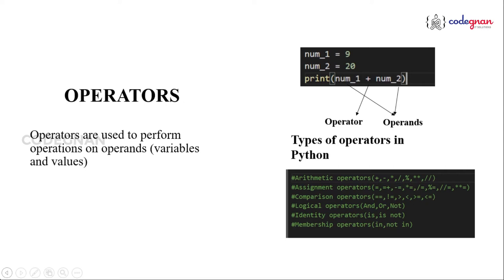Now let us understand the fourth type of operators, which are identity operators. We will be discussing these two unique operators — identity and membership — which are present only in Python and not in other programming languages.